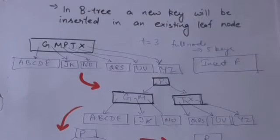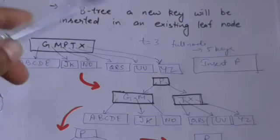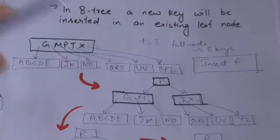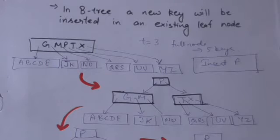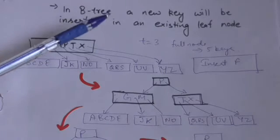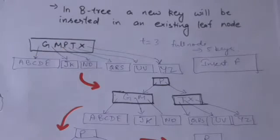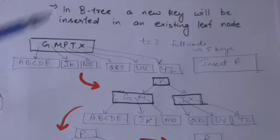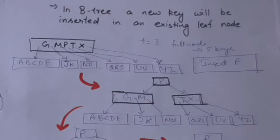Consider this B-tree. The minimum degree of this B-tree is 3. So any node of this B-tree is considered full if it has 5 keys. If any node has 5 keys, that node is full.